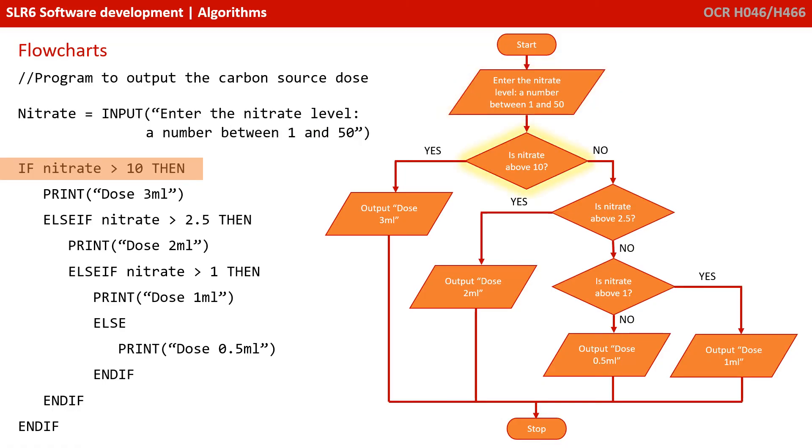We ask, if nitrate is greater than 10, then dose 3 mil. Otherwise, if nitrate is greater than 2.5, then dose 2 mils. Otherwise, if nitrates is greater than 1, dose 1 mil.